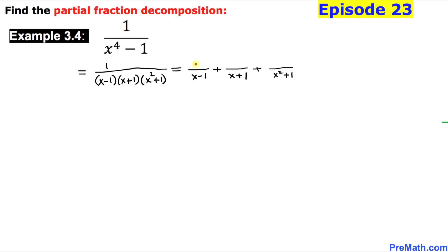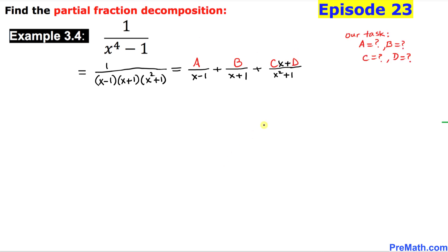Now let's focus on the numerators. For the linear factors we put constant A over the first fraction and constant B over the second. Since we are dealing with the quadratic factor, we put Cx plus D over the third. Our task is to find the values of the constants A, B, C, and D.